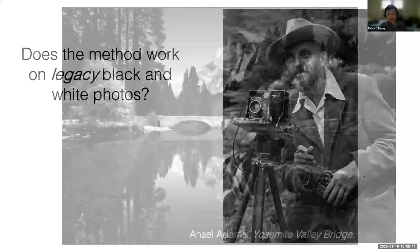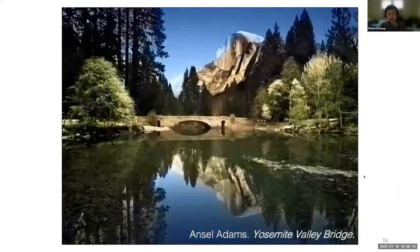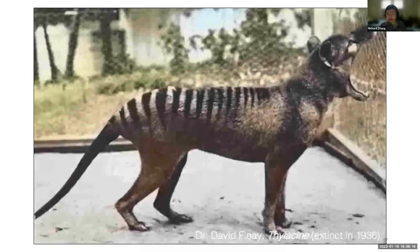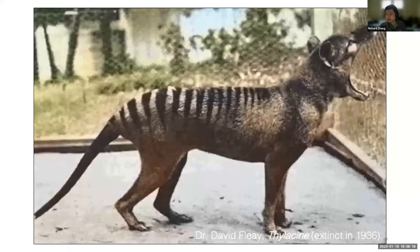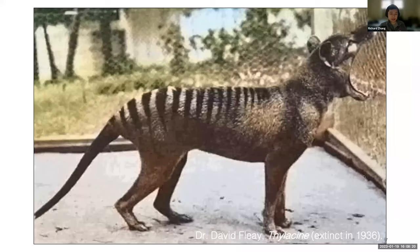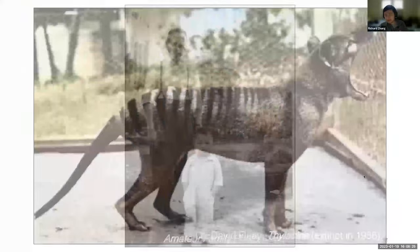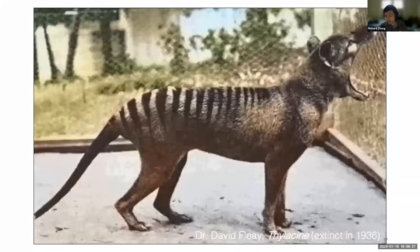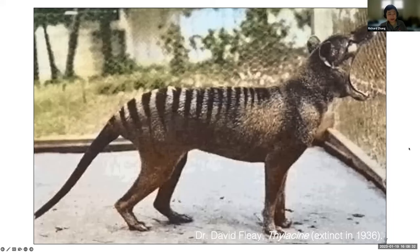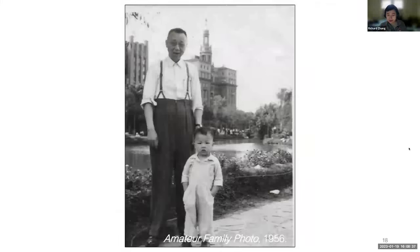We tried this on a whole bunch of legacy black and white images like this bridge. We took this image of a thylacine, an extinct animal. This is the last one that's known to be alive. I'll mention there supposedly scientists are trying to revive this creature, so perhaps we'll get to see it in the future. There's a photo of my father and my great grandfather back in the 1950s. We predicted some kind of plausible colors for the face and the vegetation.